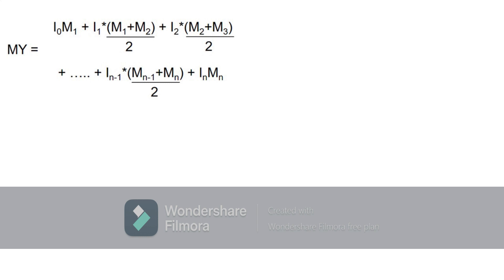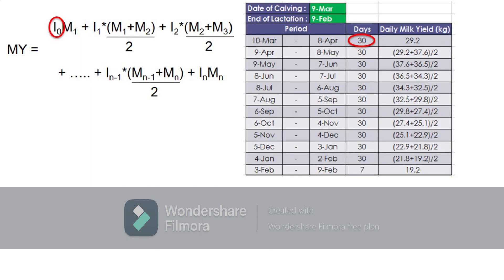Substituting the values in the formula: the interval between the lactation period start date, which is March 9, and the first recording date, which is April 8, is equal to 30 days and includes the days March 10 until April 8. The interval between the 1st and 2nd recording dates, which are April 8 and May 8 respectively, is equivalent to 30 days including the days April 9 until May 8. The interval between the 2nd and 3rd recording dates, which are May 8 and June 7 respectively, is equivalent to 30 days including the days May 9 until June 7.